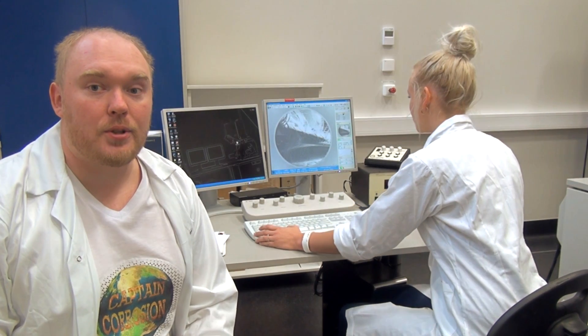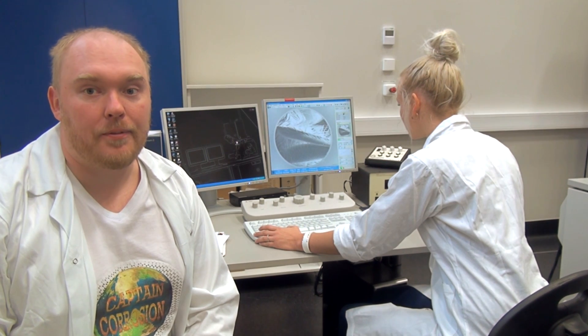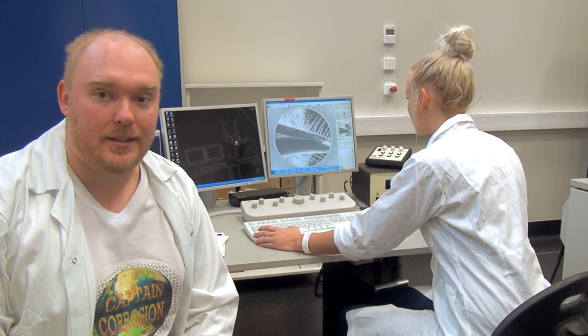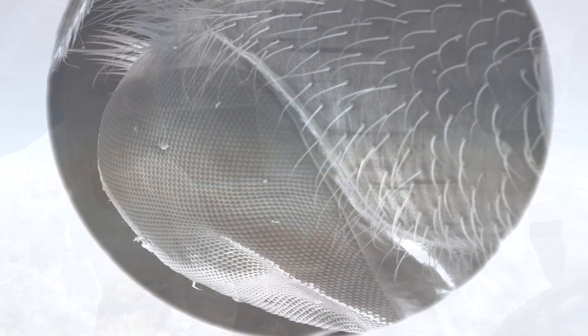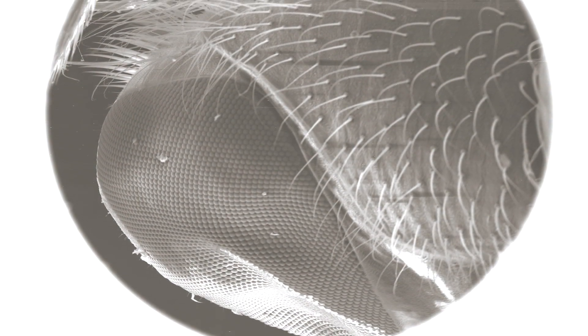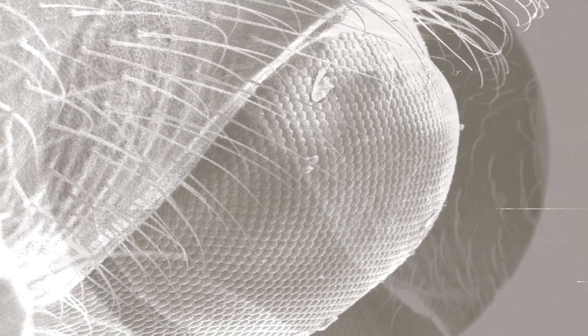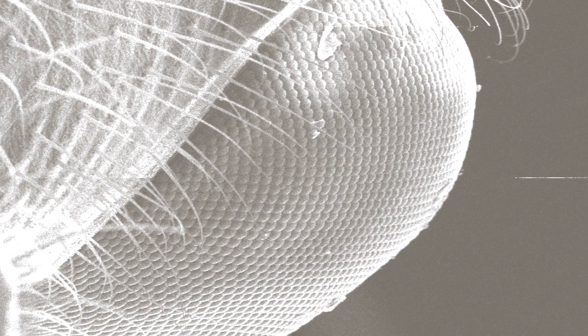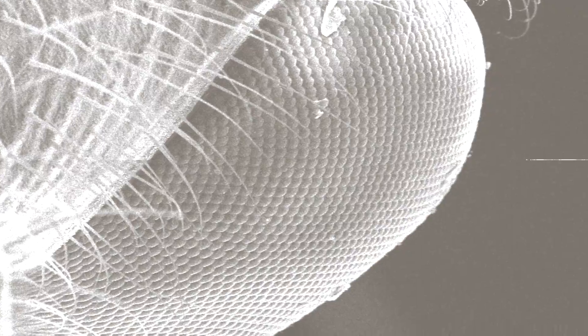The next stop is the eye of the fly — one of the thousands, that is. Flies have a pair of large compound eyes on the sides of the head. Compound eyes consist of many photoreceptor units, thus providing a wide-angle view.